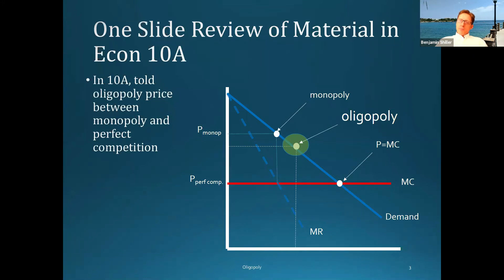Let's start by talking about the second of the two cases where firms choose quantities. That was the Stackelberg case, where there's a leader who announces how much they're going to produce first, and a follower that then decides how much to produce as well.